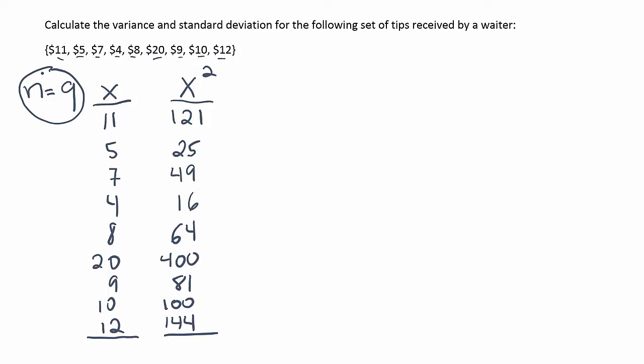All right, so what have we done so far? We counted up how many values we had and called that n. That's our sample size. We then created a column where we just listed the data values that we were given and then we squared all of those values and put them into a column called x squared.